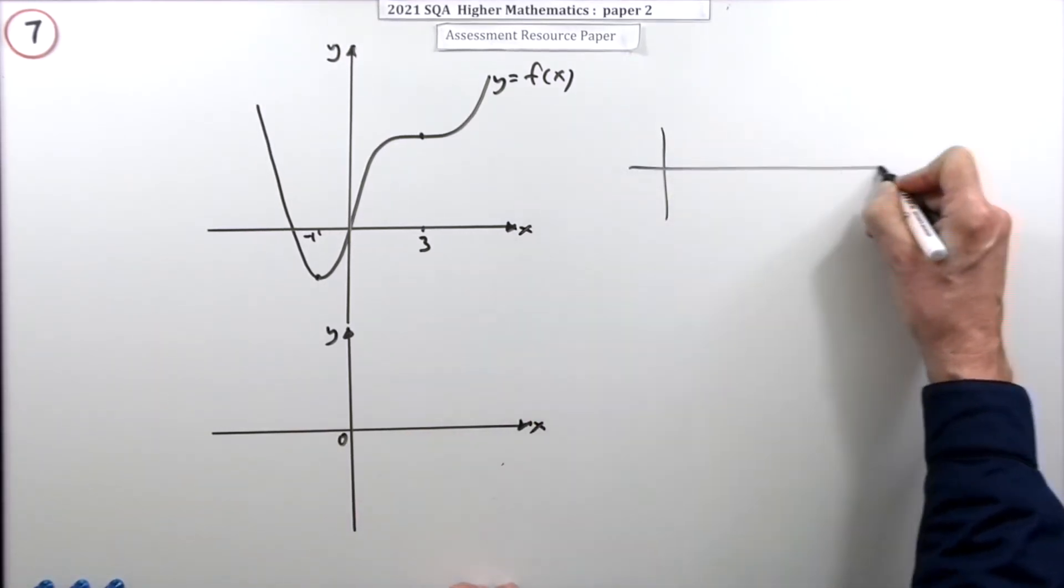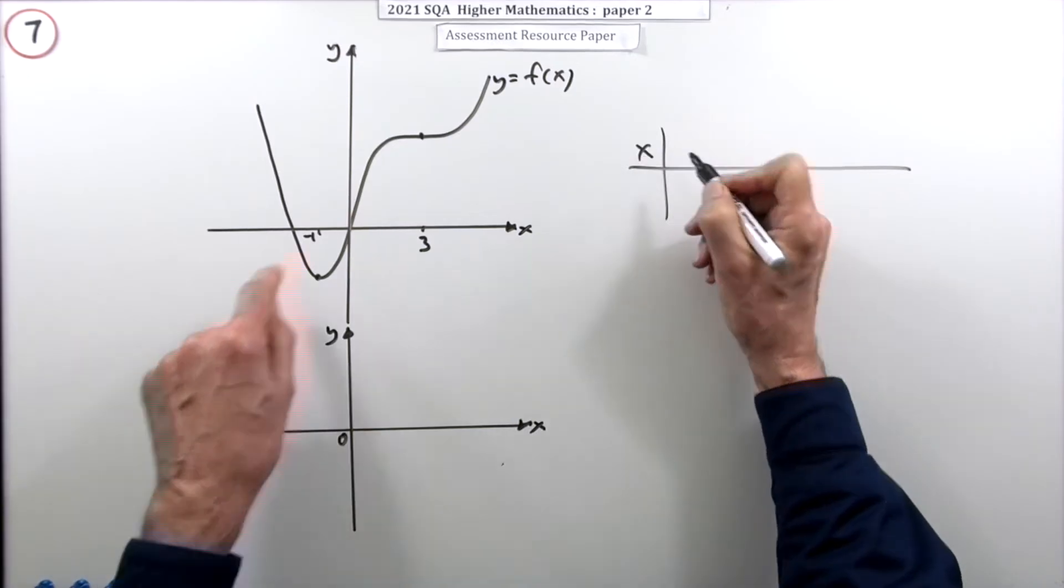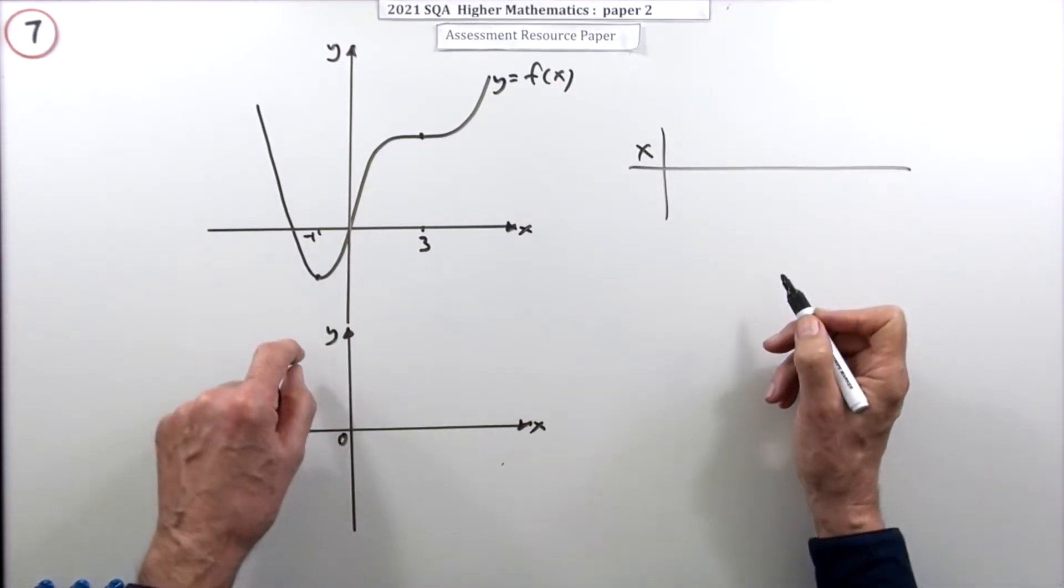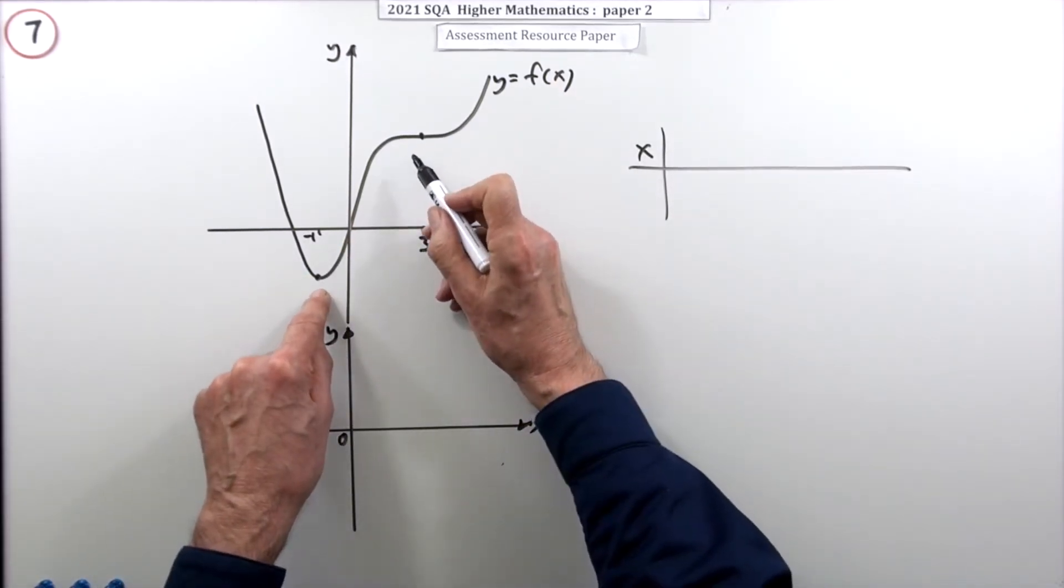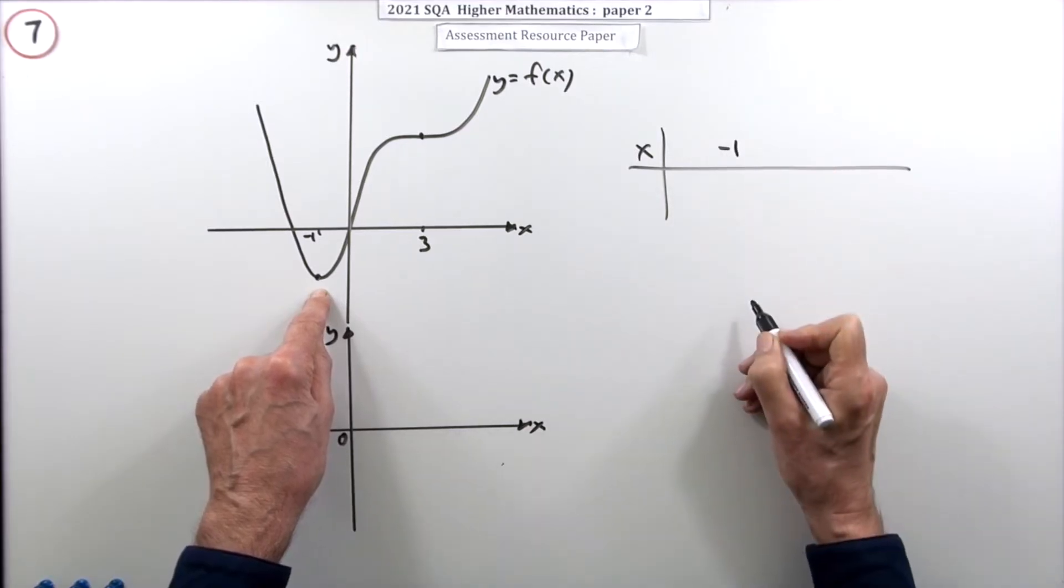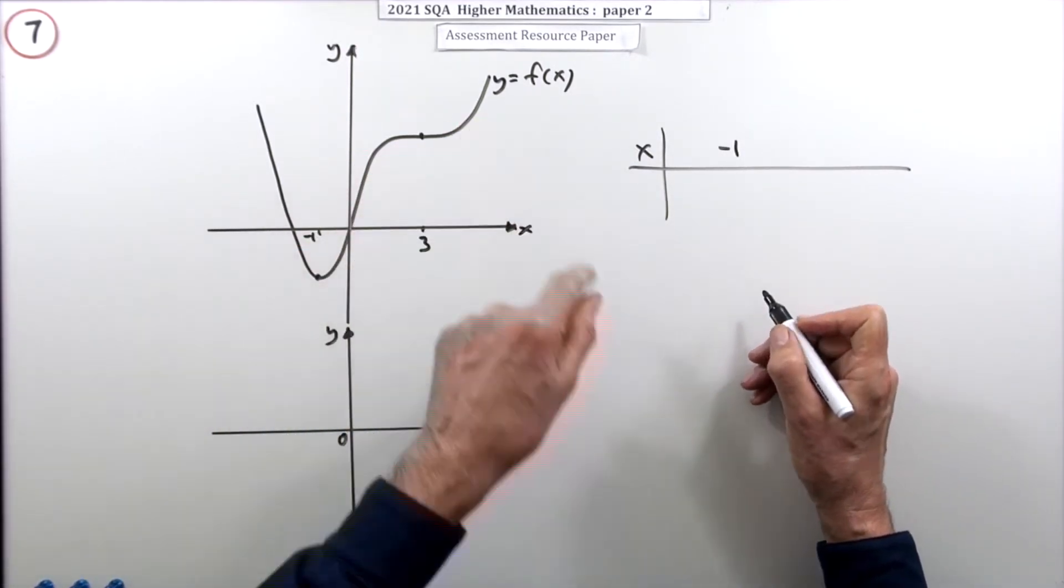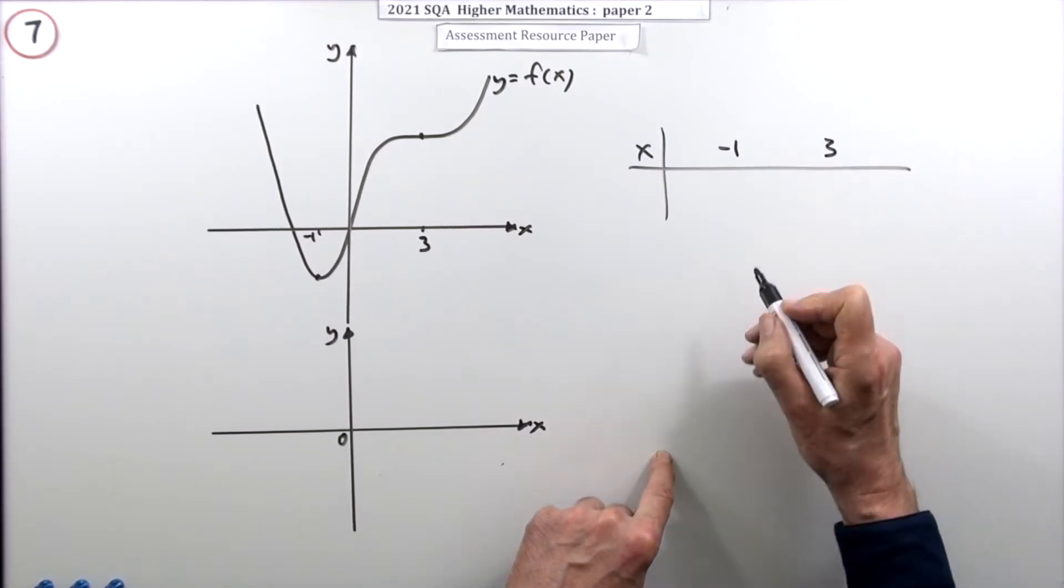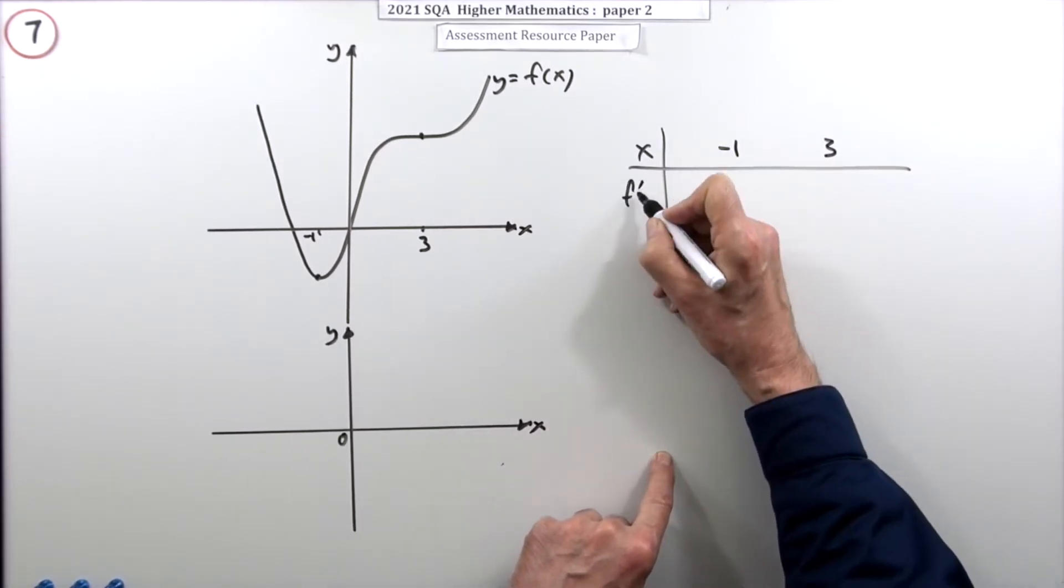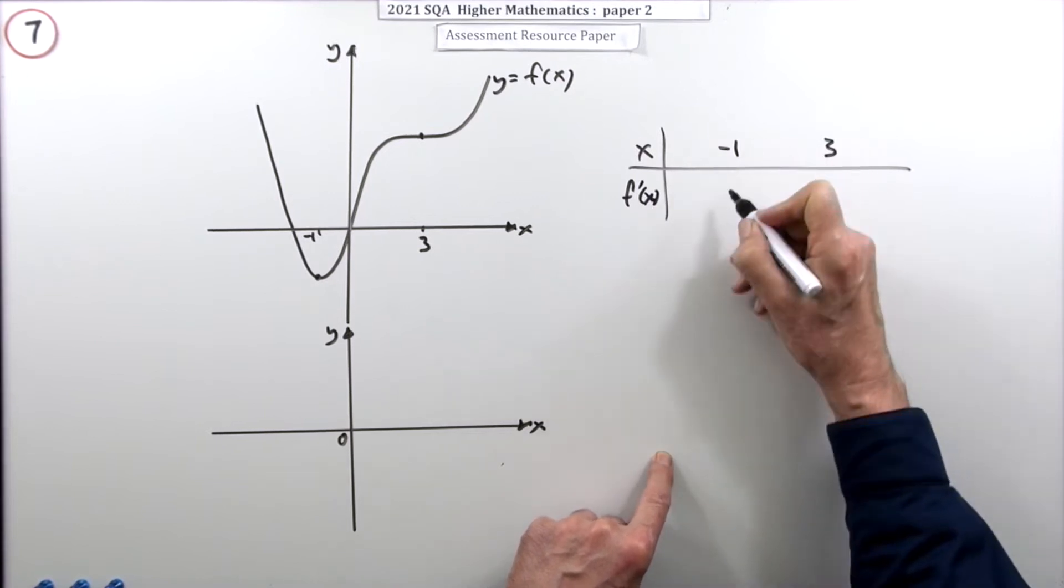So what you want are the gradients. Well there's several ways to set that out. You could put down a table of signs. For this graph for x what are the various gradients? Well there's two shown stationary points. There's one at negative one, that's a minimum, and there's a point of inflection, a rising point of inflection at three. At both of those points, f dashed x is equal to zero.